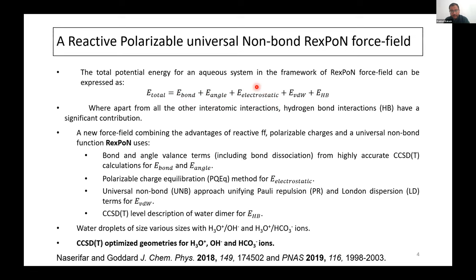We compute electrostatics using a polarizable charge equilibration method, QEq, which combines the advantages of the charge equilibration QEq model already implemented in LAMMPS, and we add a Drude oscillator model for core-shell separation to include polarizability effects. For the non-bonded part, we do PBE calculations on solid crystal structures to obtain equations of state. From these, we derive a universal non-bond potential where every atom's non-bond interaction is defined by three parameters: the well depth, the equilibrium distance (van der Waals radius), and the curvature width. We also compute hydrogen-bonded energy using coupled cluster level calculations.